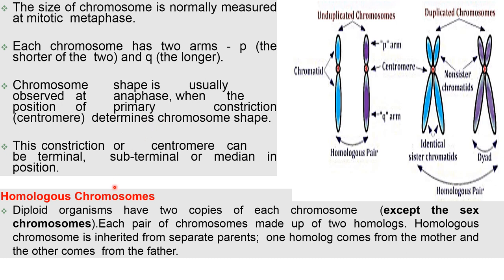Homologous chromosomes: diploid organisms have two copies of each chromosome, except sex chromosomes. Each pair of chromosomes is made up of two homologs. Homologous chromosomes are inherited from separate parents — one homologous chromosome from the mother and the other from the father.